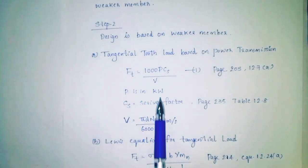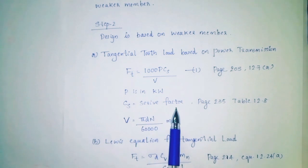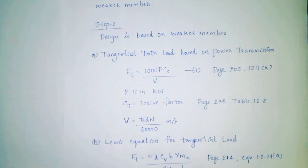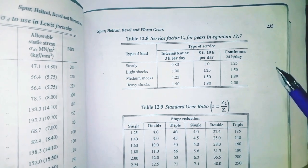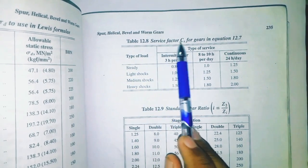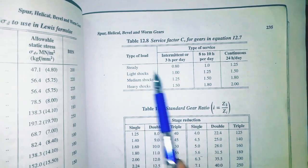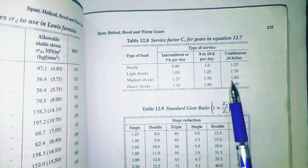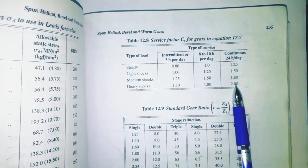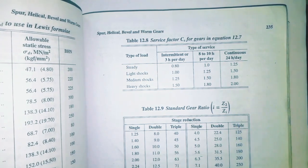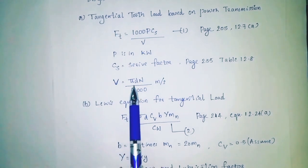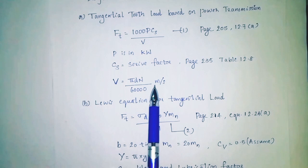P is in kW. CS is the service factor from page 235, table 12.8a. Service factor values: steady and continuous 20 hours per day = 1.25; light shock = 1.5; medium shock = 1.8; heavy shock = 2.0. Velocity V = π·D·N divided by 60,000 in m/s.